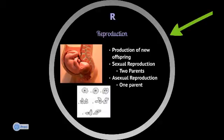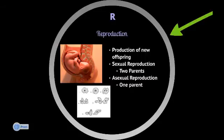R stands for reproduction. In order for a species to continue and thrive, they must reproduce — that's really the definition: the production of new offspring. There are a couple types of reproduction. One is sexual reproduction, and many higher-level organisms take part in this — mammals, amphibians, reptiles — where there are two parents. Then there's also asexual reproduction, which seems to be characterized by very simple, single-celled organisms. This is when there's one parent, and that parent can actually split apart. We're going to talk more about that in some upcoming units.